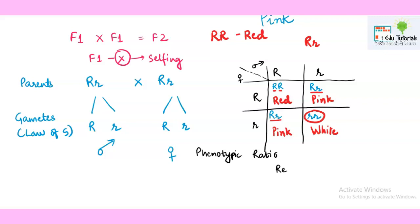So you can see here that if we will calculate the phenotypic ratio of incomplete dominance in F2 generation, then we have got three types of individuals: red, pink, and white. How many individuals are there with red color? One. With pink color? Two. With white color? One. See here one red is there, two pink are there, and one white is there. So our phenotypic ratio will become one is to two is to one.